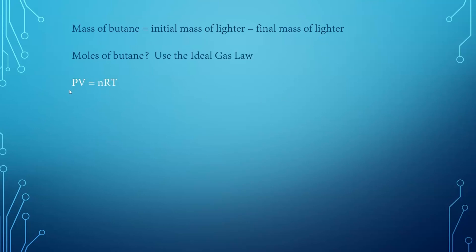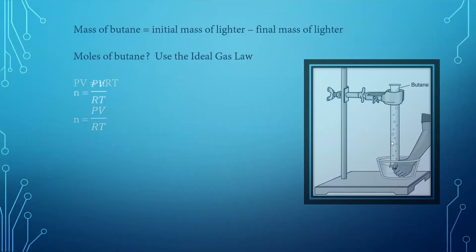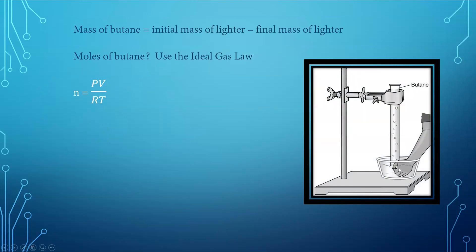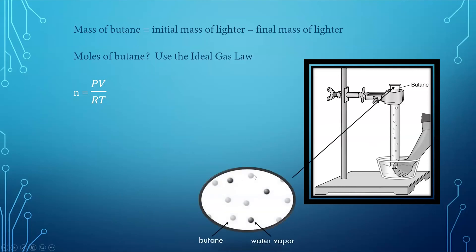To get the moles of butane, we can't get that directly, so we use the ideal gas law: PV = nRT. We're looking for n, which means we need pressure, volume, temperature, and the gas constant. When we collect our sample of butane, because it's passing through water, some water will evaporate into the cylinder as well — meaning not all of the gas molecules collected are actually butane. Most will be butane molecules, but some water molecules will be present too. So we can't assume the pressure inside the cylinder is completely due to butane — a small amount will be caused by water vapor pressure.